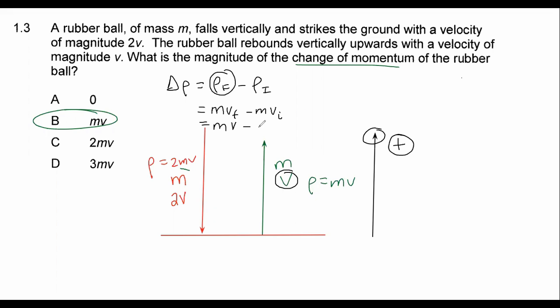Then we say minus. Now, the original, I mean, the original mass is obviously M. But look at the initial velocity. It's 2V, but it's going down. And we chose up as positive. So this actually becomes a negative 2V.